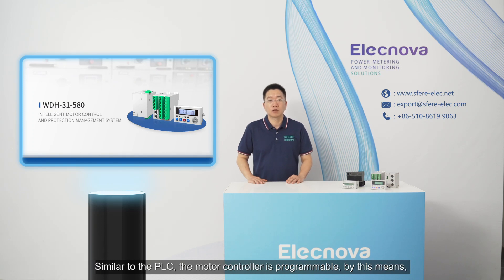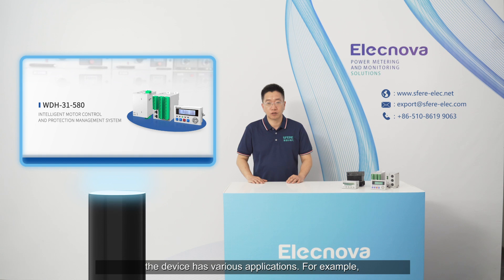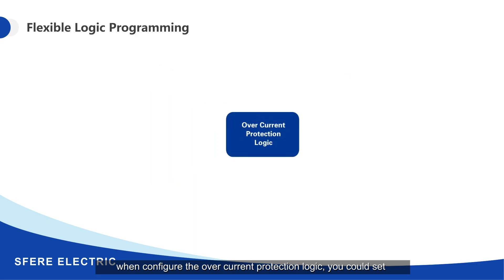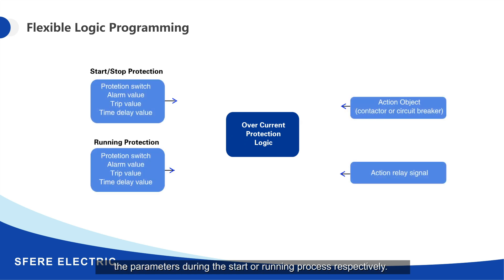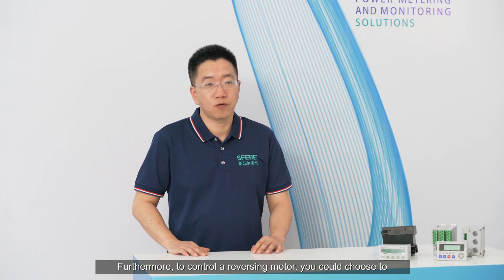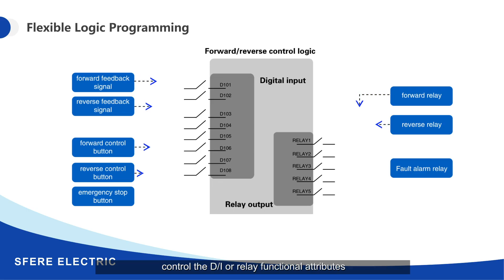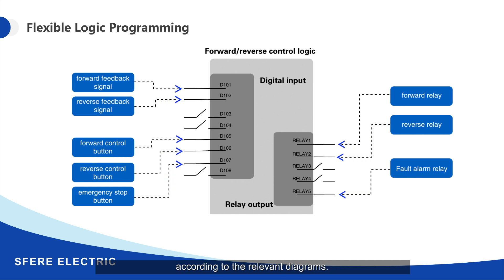Similar to a PLC, the motor controller is programmable, meaning the device has various applications. For example, when configuring overcurrent protection logic, you can set parameters separately for the start or running process. Furthermore, to control a reversing motor, you can choose to control the digital input or relay functional attributes according to the relevant diagrams. This simplified the wiring and commissioning process.